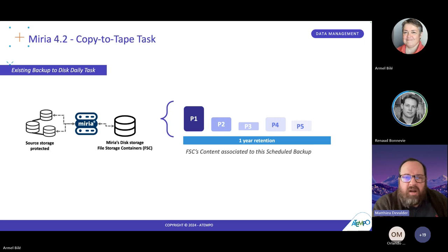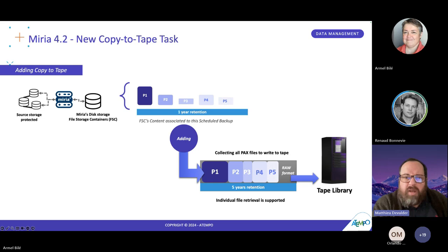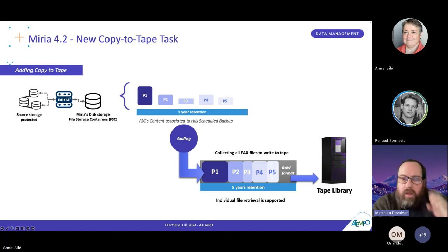The file storage container P1 is, for example, a full backup, and then P2 to P5 are incrementals, with a one-year retention. Aside from this, we may copy all this data — P1 to P5 — to tape. We collect all the pack files and write them directly to tape with a way longer retention, such as five years in this example. The good news is that everything is granular — you may restore and retrieve individual files when there is a need.